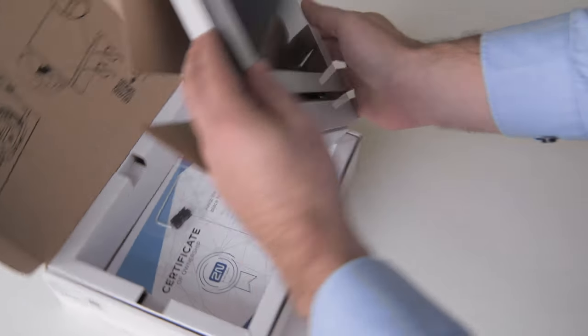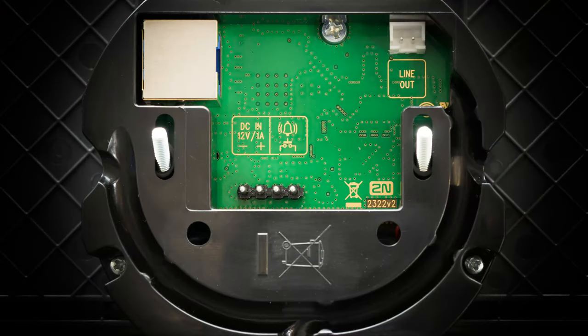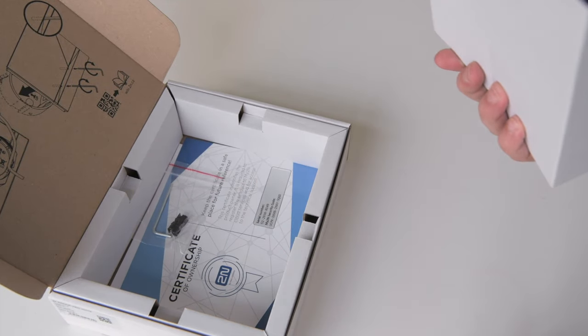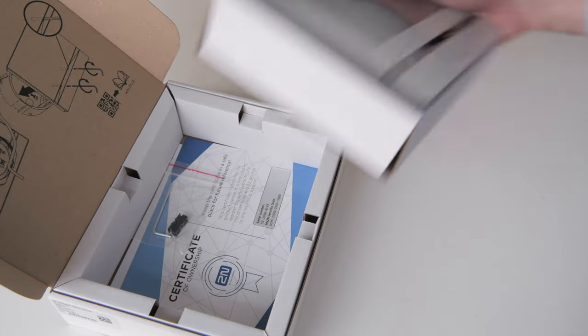At the back of the unit you've got the ethernet port which supports PoE, terminals for external power and a doorbell button, plus a line out for an external induction loop. The terminal connectors come in the box along with the hex key used for tightening the screws of the unit.